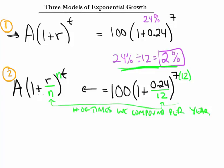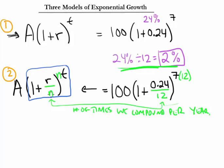Now we can imagine compounding the 24% annual interest in successively smaller intervals — every month, every day, every hour, every minute, every second. What if we compounded this $100 continuously? As the intervals get shorter and shorter, we're really asking: what happens to (1 + r/n)^n as n gets larger and larger?